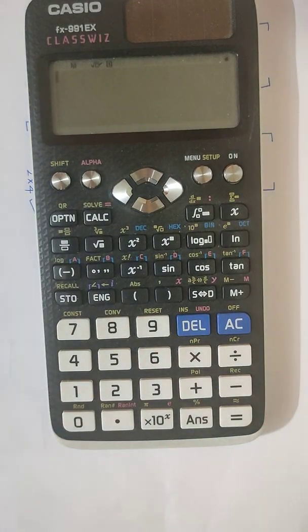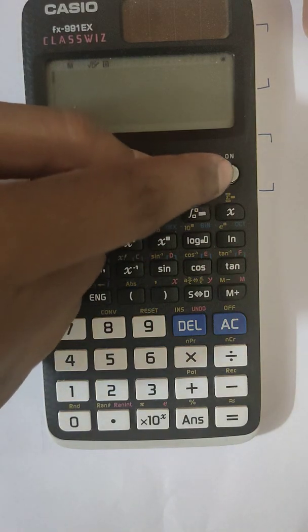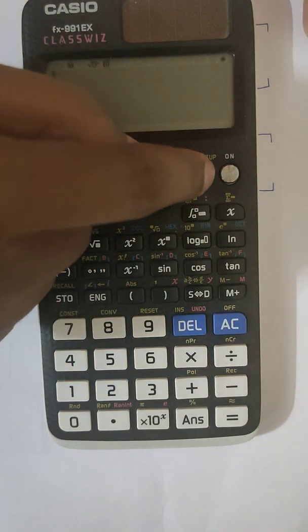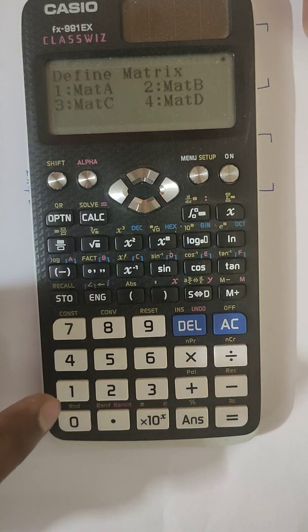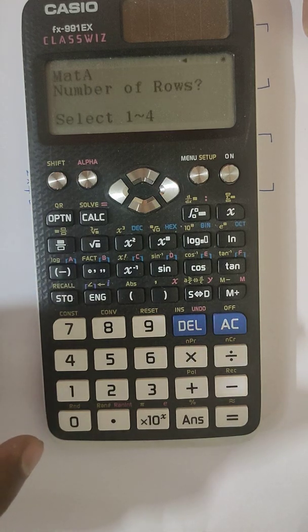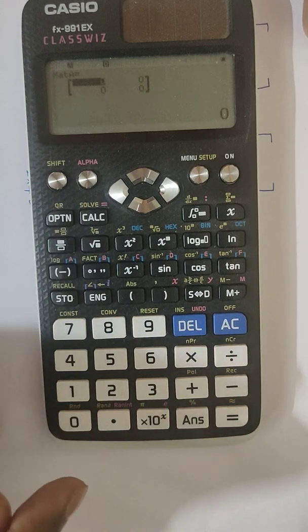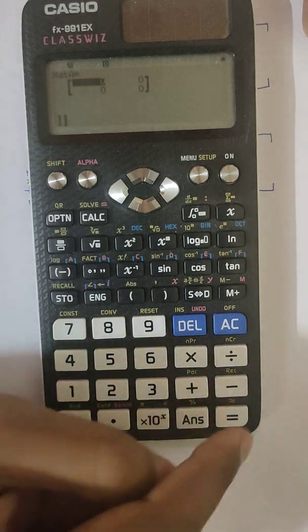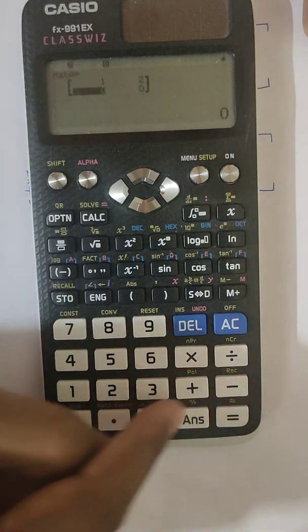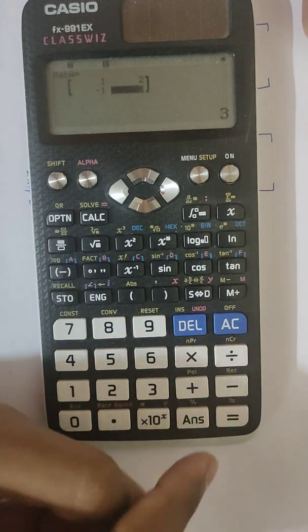In the last class we have seen how to enter a matrix in the scientific calculator. Now here we will do this thing twice because for a product we need two matrices. So you can turn on the calculator, then press on menu, setup. At 4 we have matrices. Now I'm going to put this in mat A, so mat A is at 1. What type of matrix you want to take? How many rows? 2. How many columns? Say 2. So we have this matrix. Now you can substitute 1, 2, minus 1, and say 3. So after substituting this, you can press on AC so that the matrix is saved in the memory.